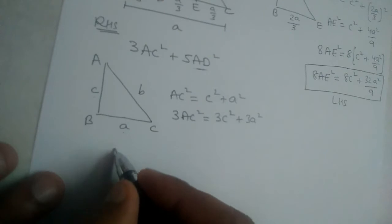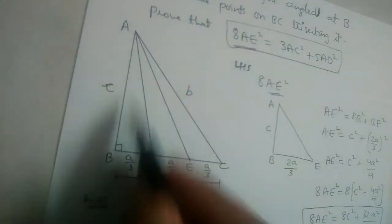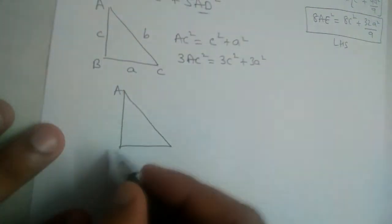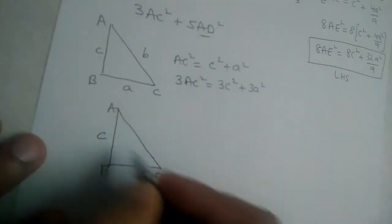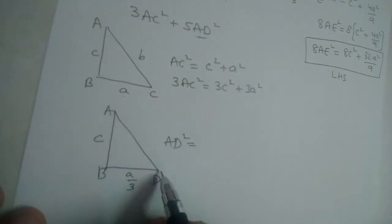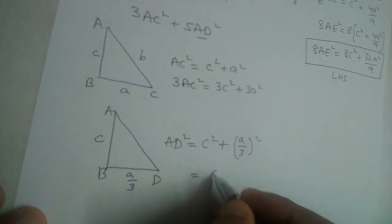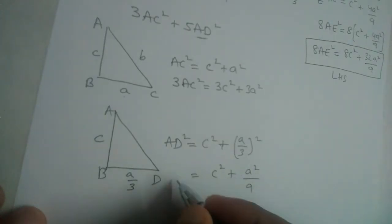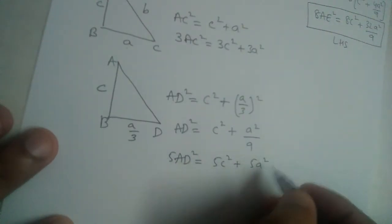Now let us find AD². In triangle ABD, AB = c and BD = a/3. Applying Pythagoras theorem: AD² = c² + (a/3)² = c² + a²/9. We need 5AD², so multiplying both sides by 5: 5AD² = 5c² + 5a²/9.